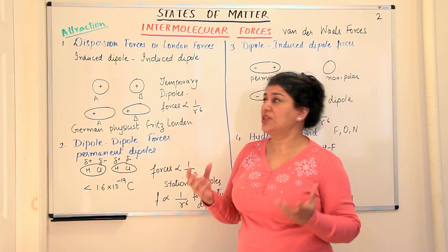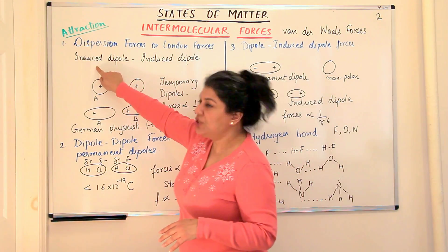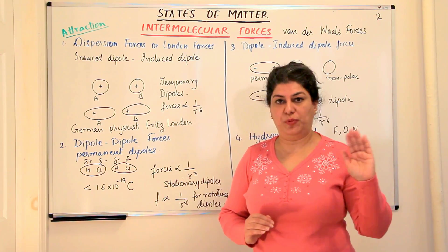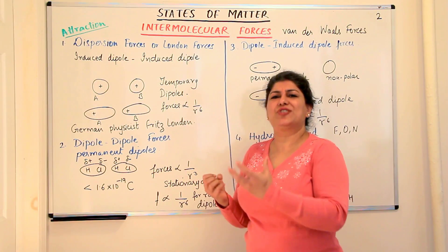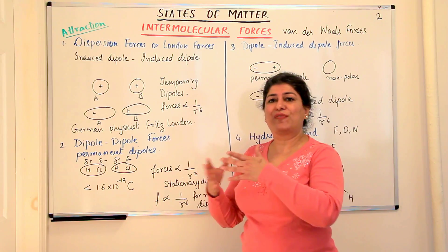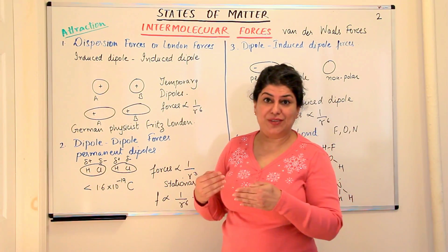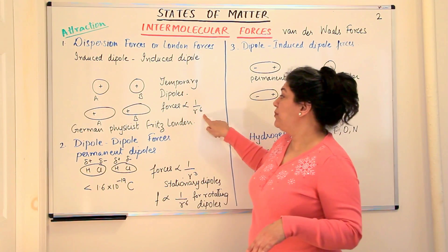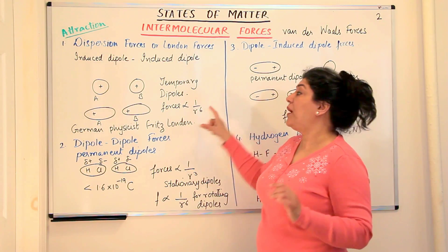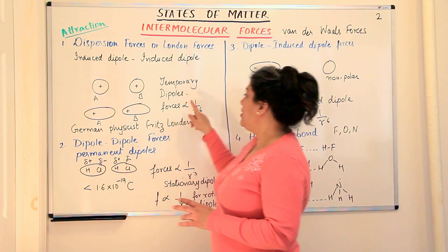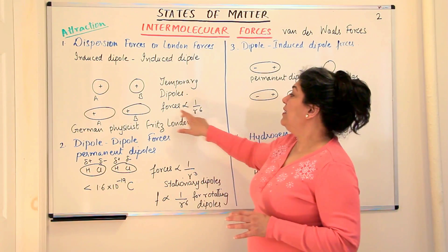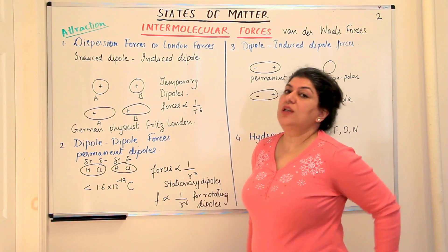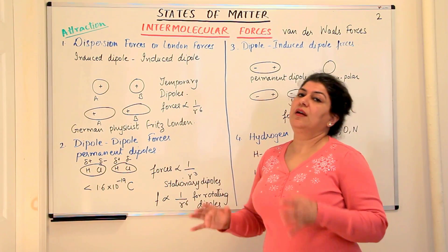Dispersion forces or London forces are forces of attraction which exist between induced dipole and induced dipole. Both dipoles were induced — the molecules by themselves were non-polar — and this is a very weak force, not like the force between two polar molecules or ions. This force is proportional to 1/r⁶, where r is the distance between the two molecules. London dispersion forces are named after German physicist Fritz London.